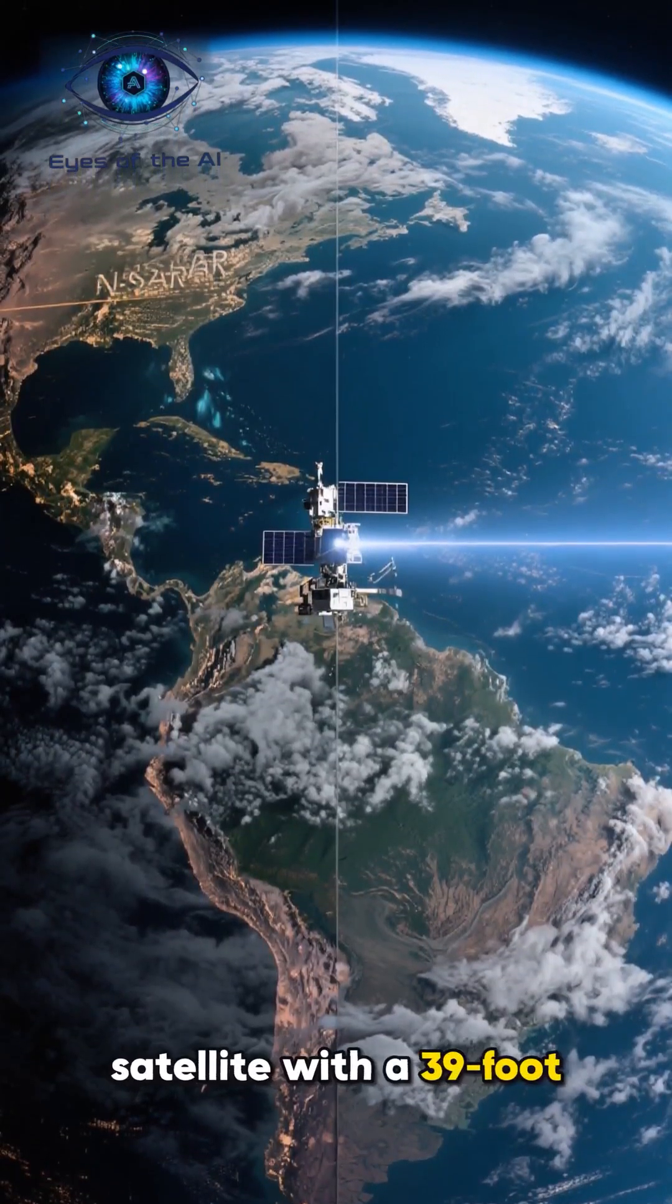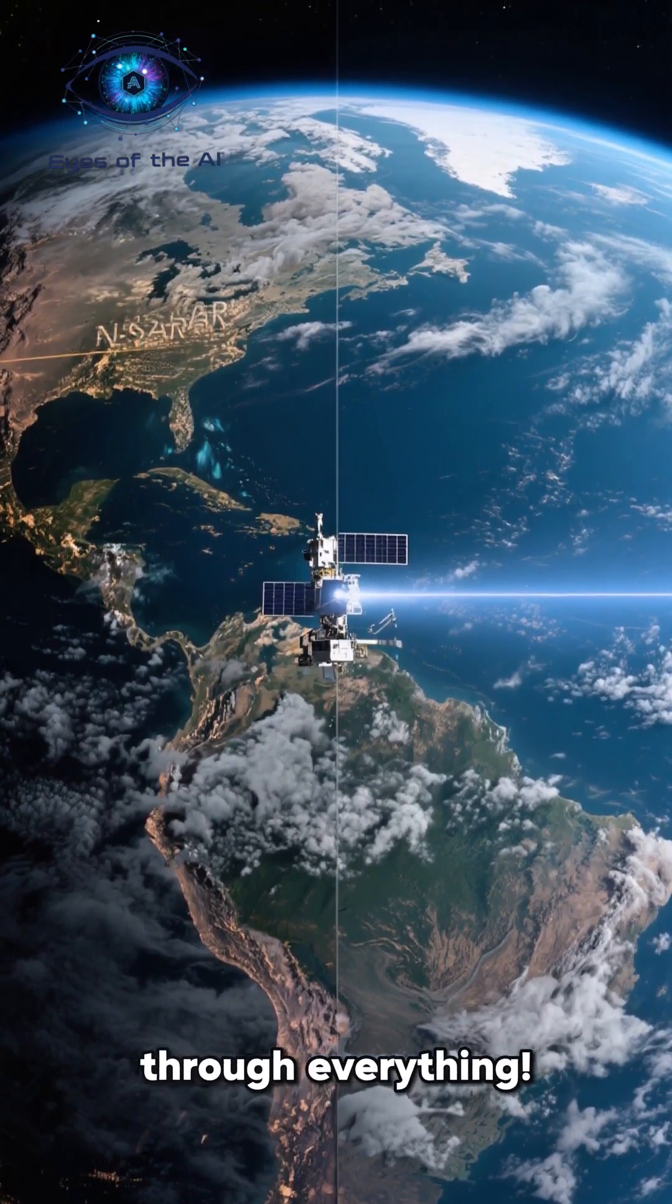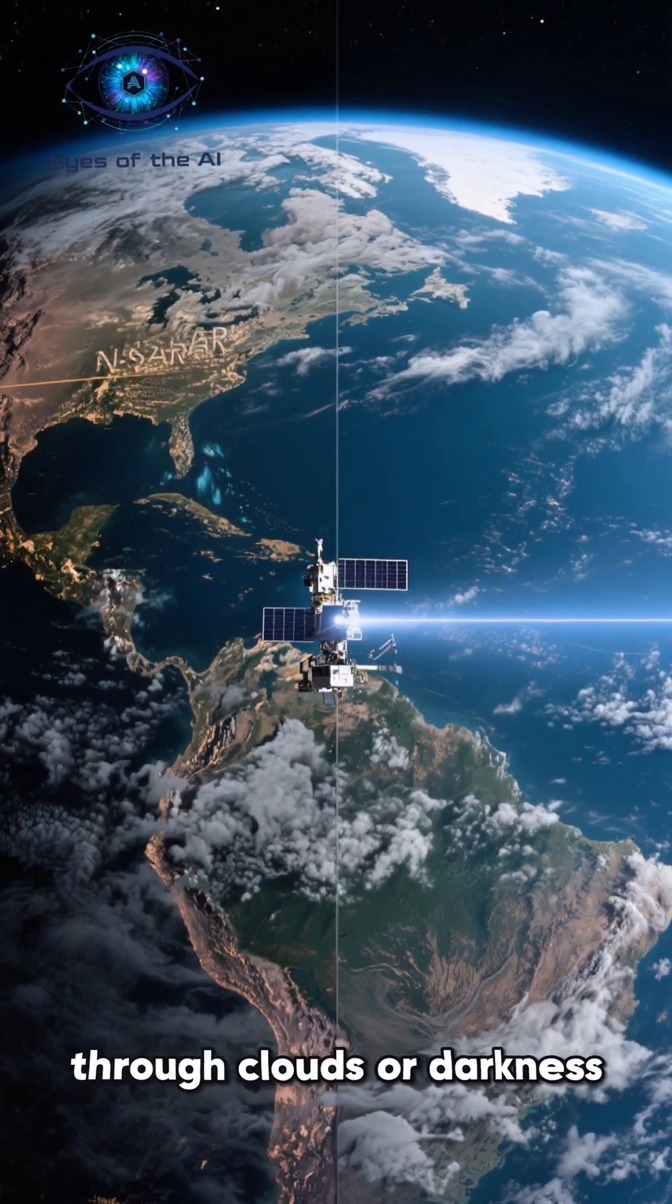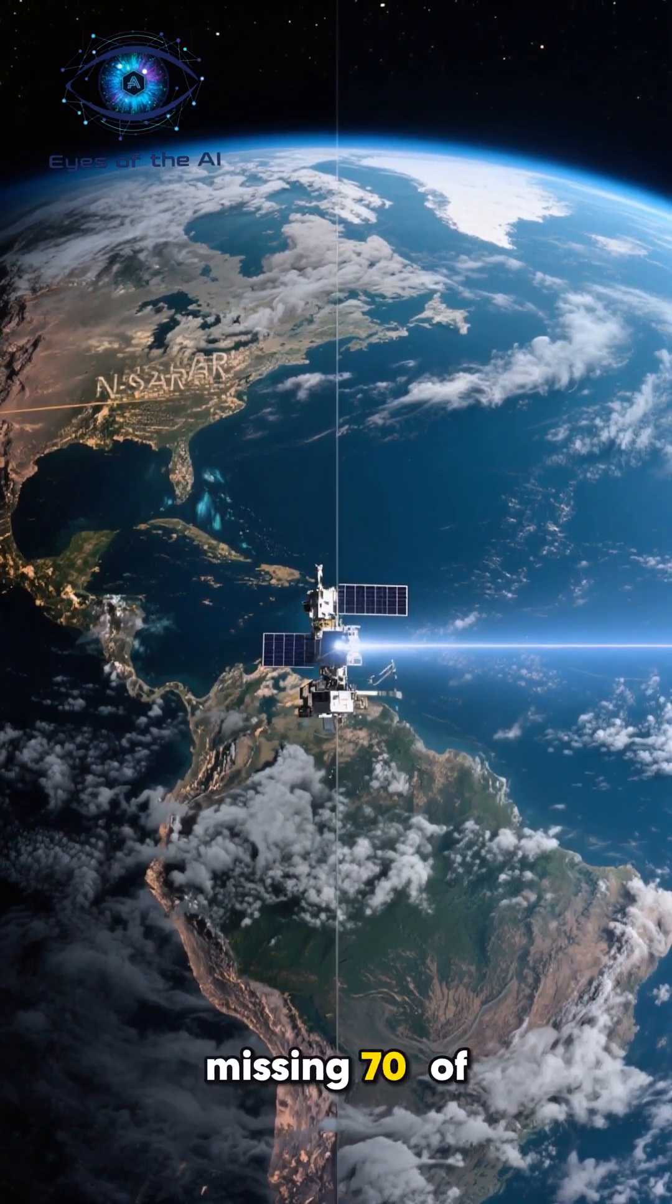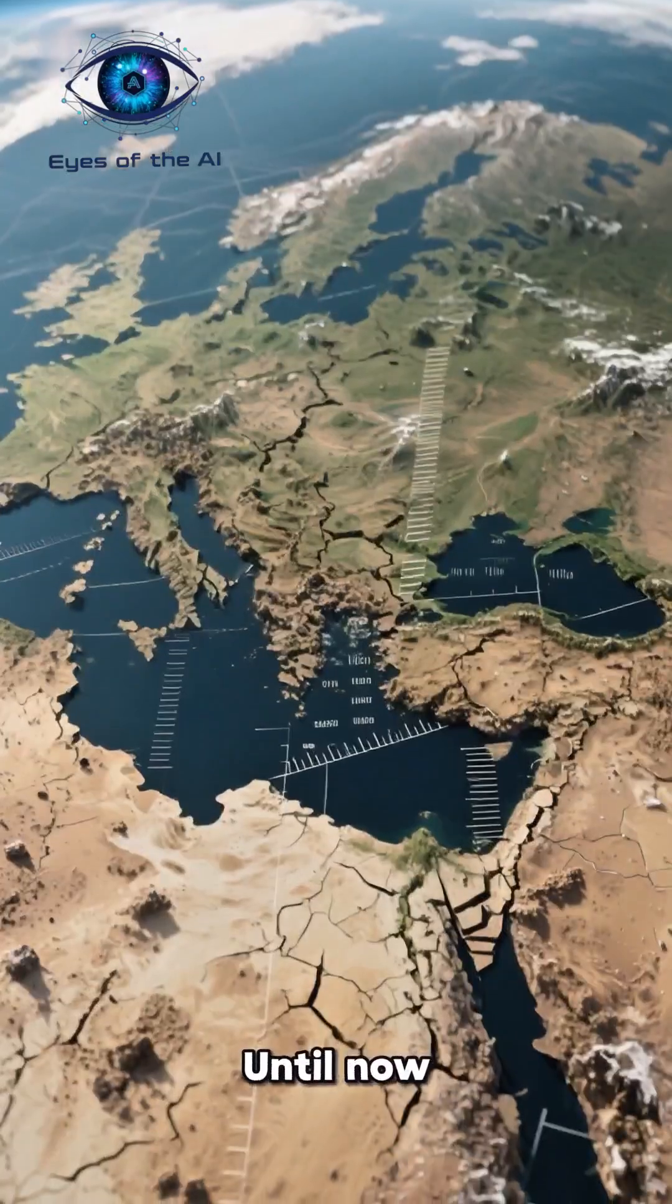Scientists just launched an AI satellite with a 39-foot radar eye that sees through everything. Traditional satellites can't see through clouds or darkness, missing 70% of Earth's changes including disasters and climate shifts. Until now.